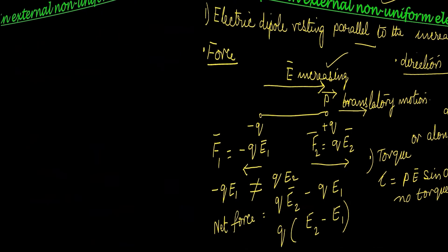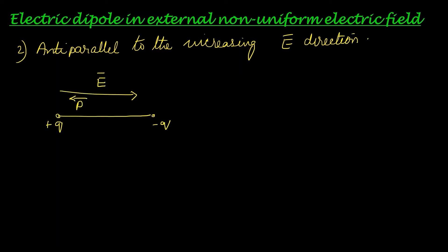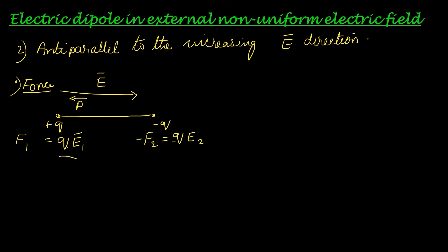Second case: the dipole moment direction is anti-parallel to the increasing electric field direction. The increasing electric field direction and dipole moment direction are opposite. At one end the electric field is less (E1) and at the other end it is greater (E2). In this case, the smaller force F1 = q·E1 acts on positive q, and F2 = q·E2 acts on negative q in the opposite direction. The force on negative q is greater because the magnitude of the electric field is more at that end.